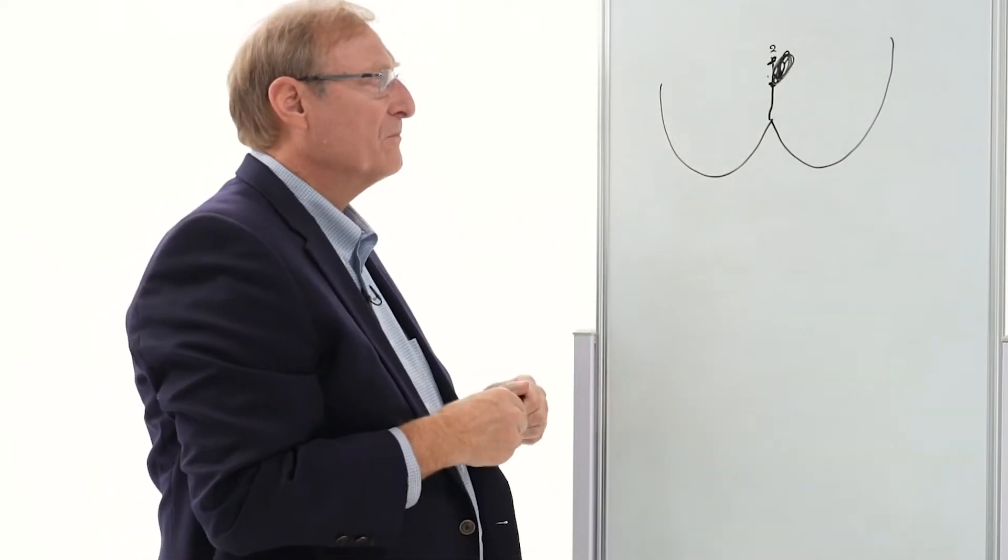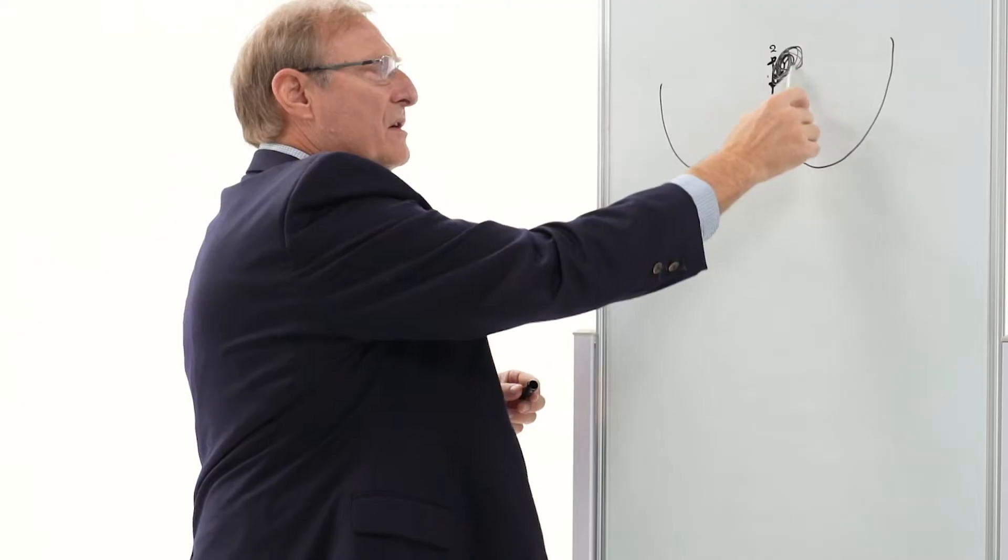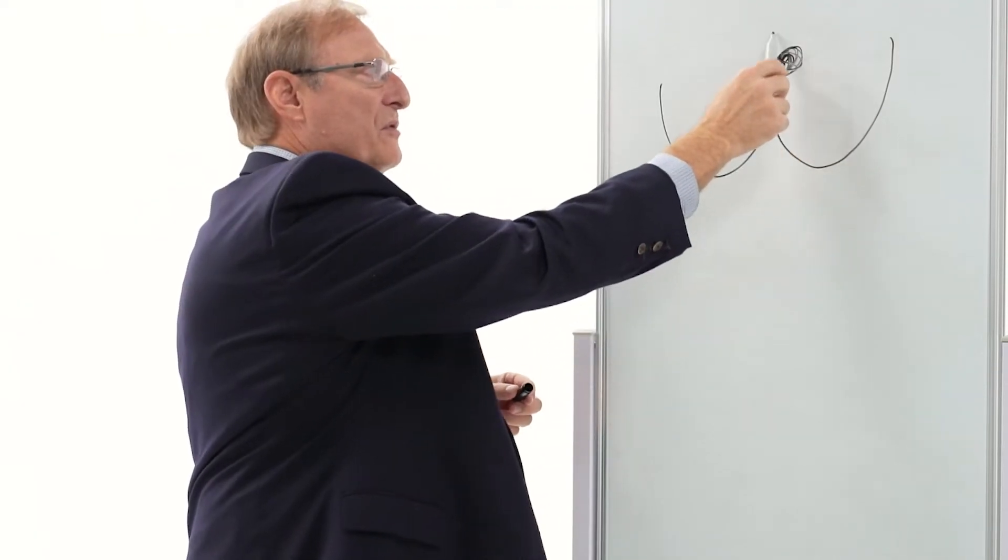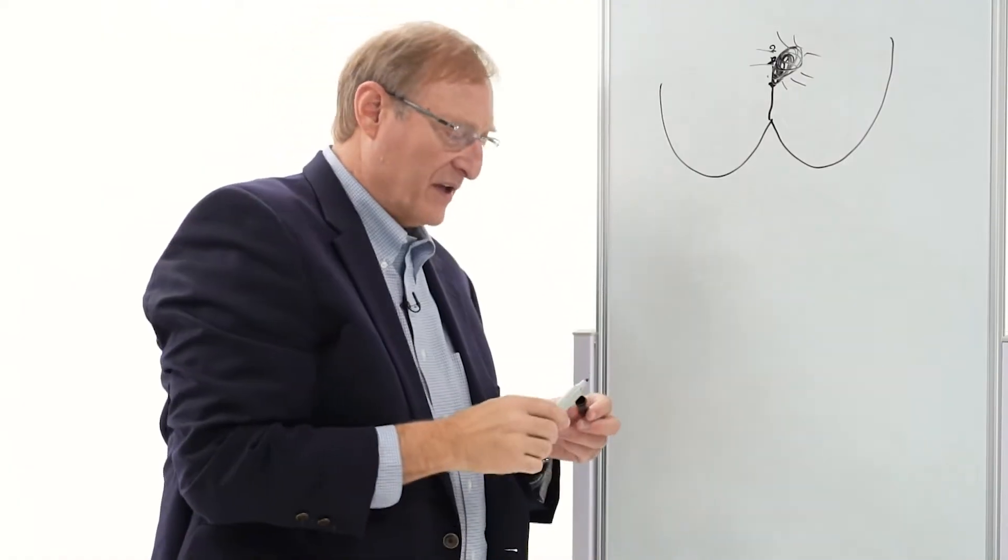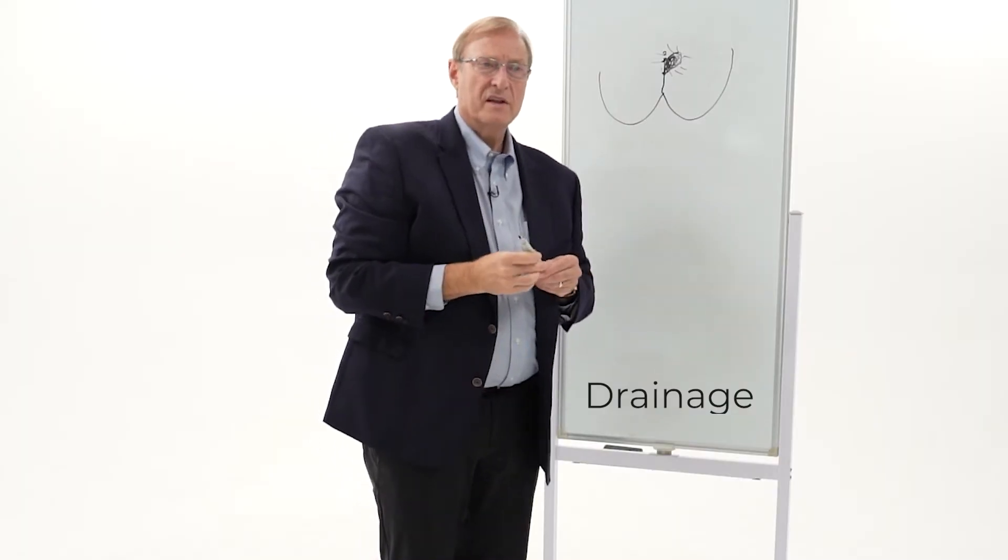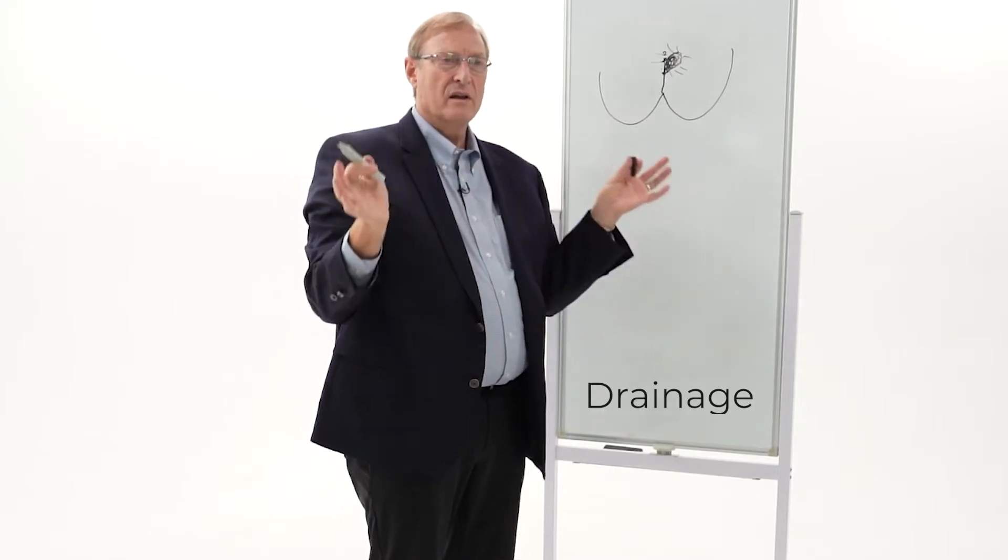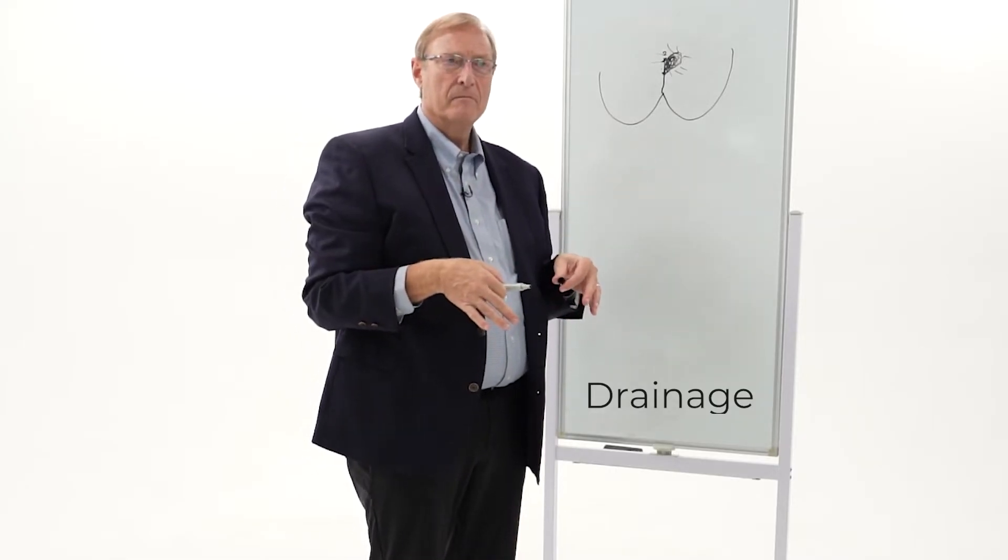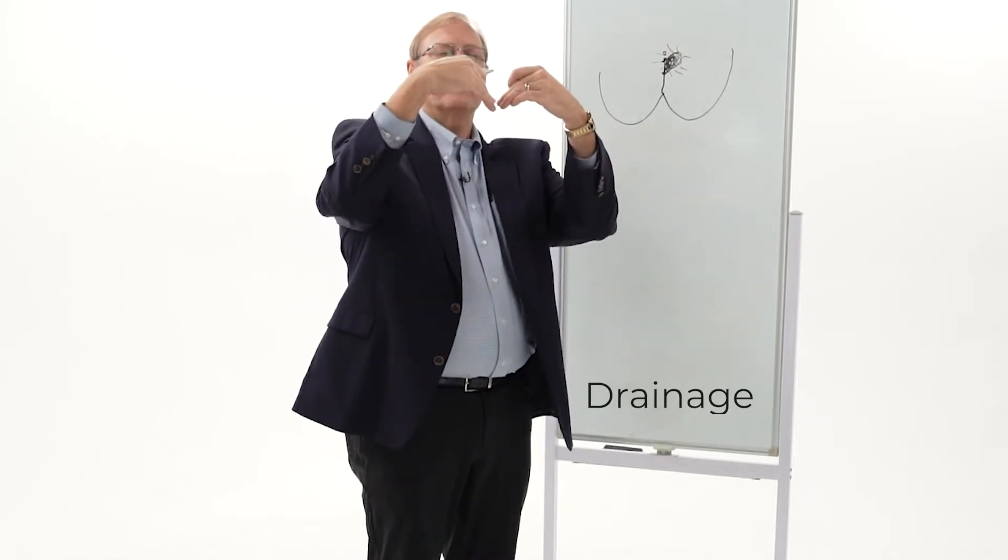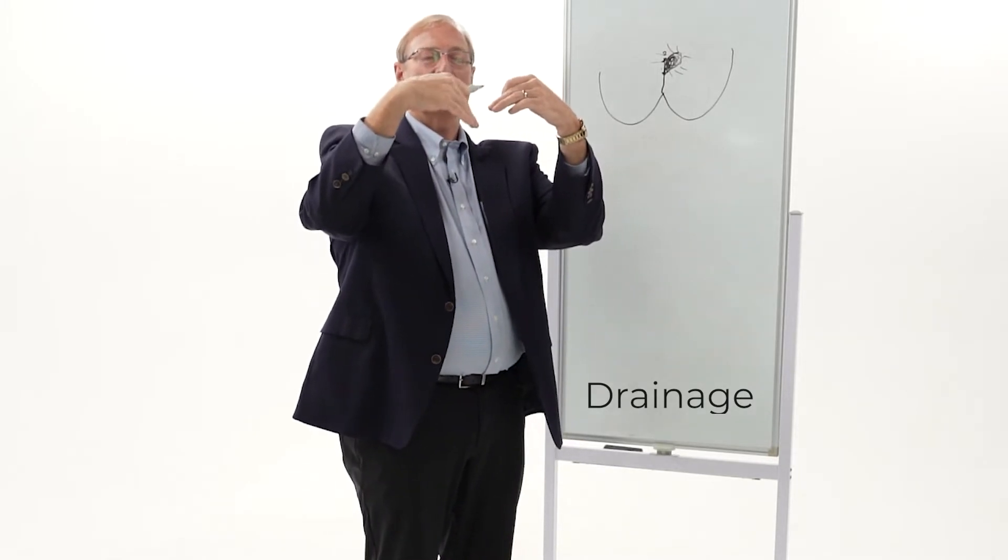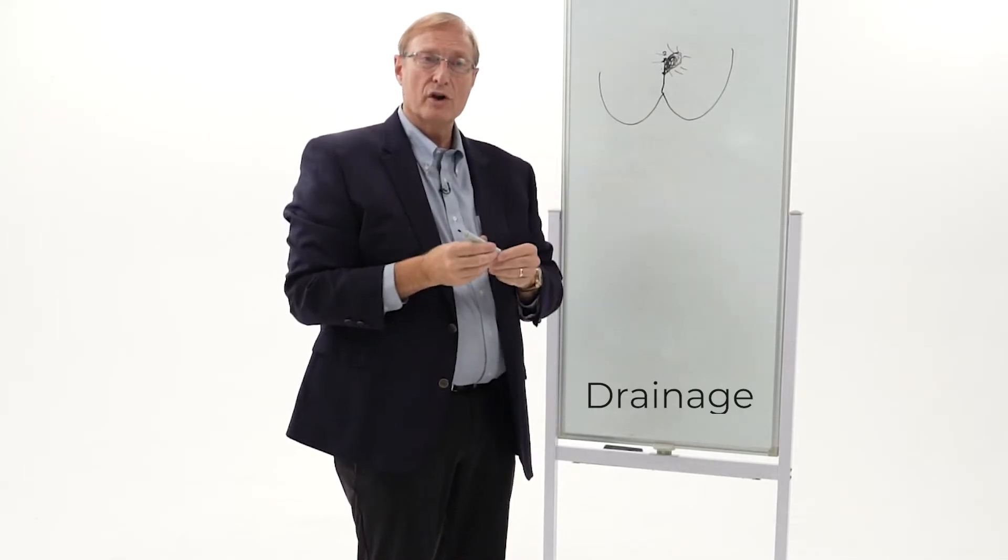If your pilonidal cyst has become infected, it will be painful, bigger than before, frequently associated with redness around it. If that's the case, the first thing that needs to happen is that cyst needs to be drained of the infection within it to let the infection clear. The second phase is to deal with the cleavage point, get rid of the pore, get rid of the cyst, and rearrange things there so it doesn't recur.